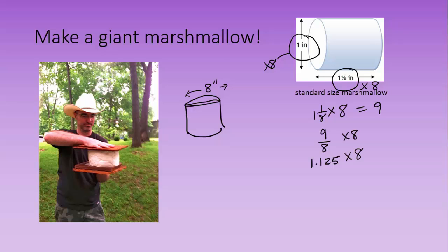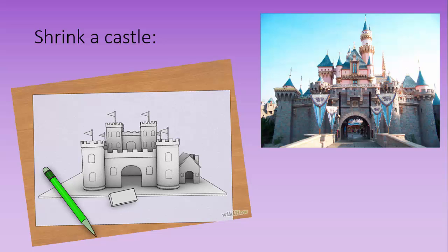So it turns out that the height has to be 9 inches if you want the new marshmallow to be proportional to the old marshmallow, and really keep those characteristics that we associate with a marshmallow-type cylinder. Okay, how about shrinking things down to a model size?